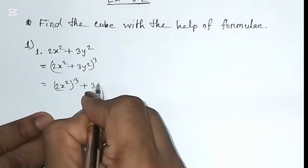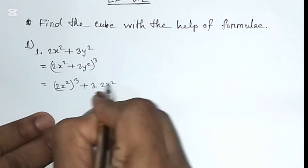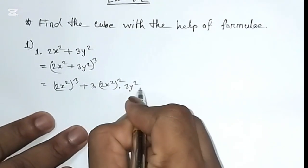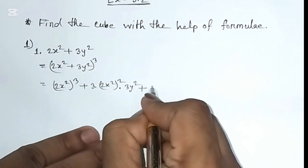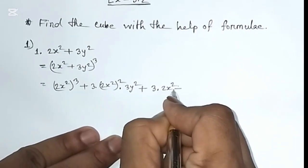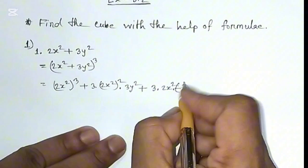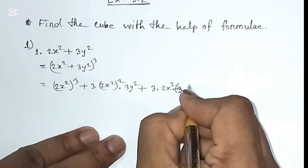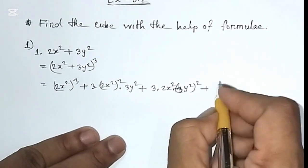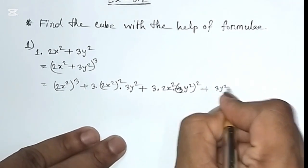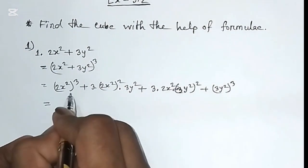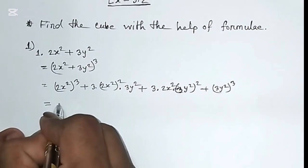...3 into a squared, which is (2x²)² into b, which is 3y², plus 3 into a, which is 2x², into b squared, which is (3y²)². Plus b cube, which is (3y²)³. So the cubic value of 2 is 8.